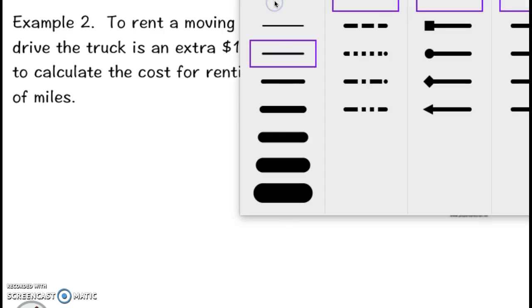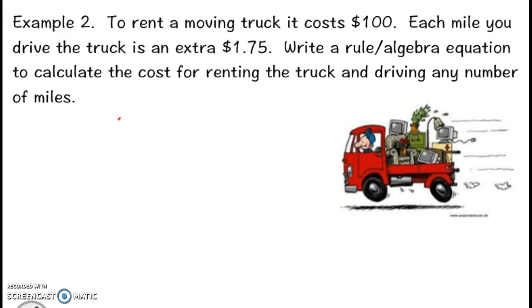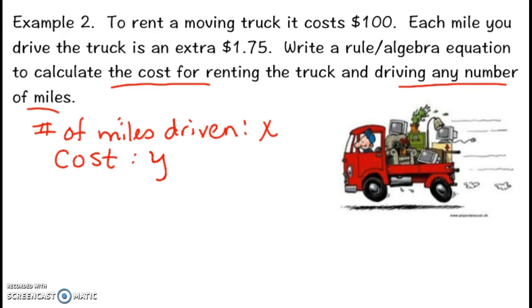Again, the first thing you need to figure out is what are your variables and what's being compared. You're trying to figure out the cost for renting the truck and how many miles you end up driving. The cost depends on how many miles you drive. So the number of miles driven is x, the independent variable. The cost, which depends on how many miles you drive, is y.